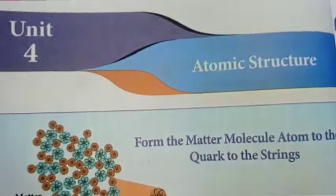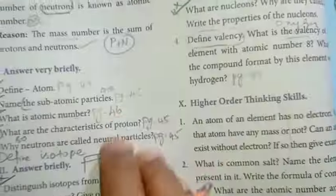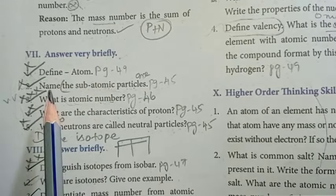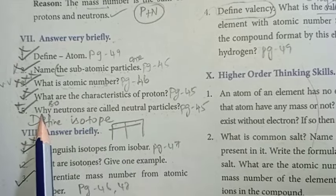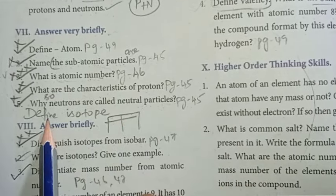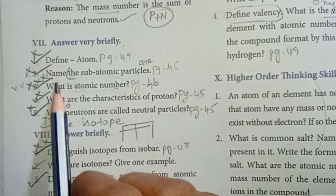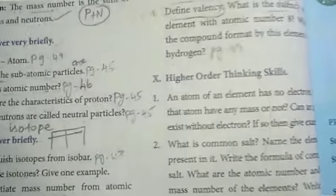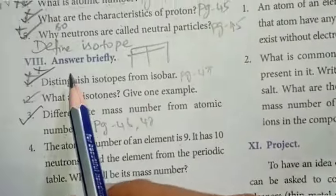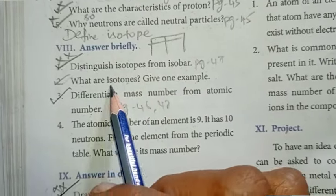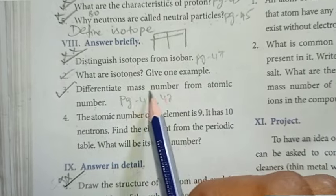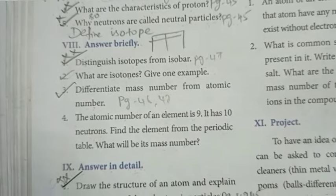Look at Unit 4: Atomic Structure. Differentiate isotope from isobar. Isotopes, isobars, and isotones — give one example. Differentiate mass number from atomic number — these are important questions.